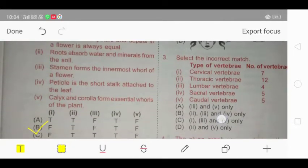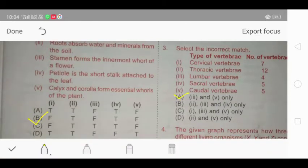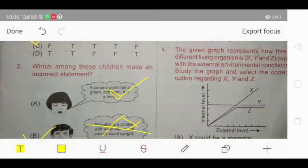So, the correct answer for question number 3 is option number A, which says that 3rd and 5th are the incorrect match.